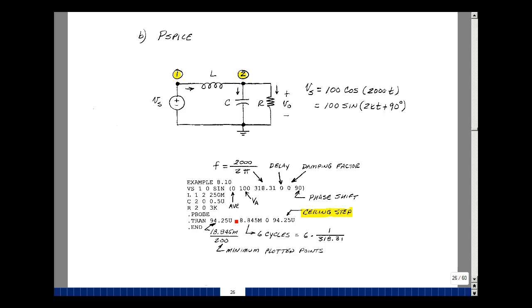Divide this number by at least 200. This is called a print step, and you'll get at least 200 points graphed on your output. And then lastly, we're going to pick what's called a ceiling step to equal the print step. I'll show you in a little bit why we're doing that.